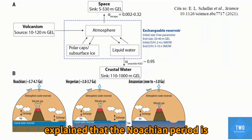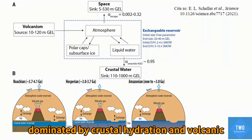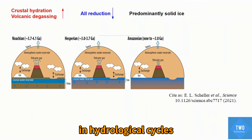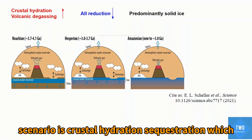The authors explained that the Noachian period is dominated by crustal hydration and volcanic degassing to reduce a huge amount of water in the hydrological cycle by their physical simulation. The best scenario is crustal hydration sequestration.